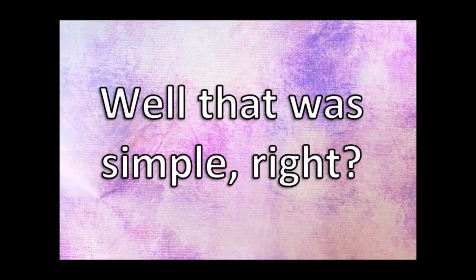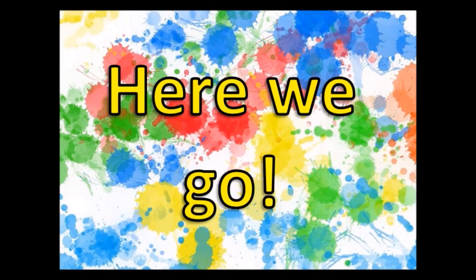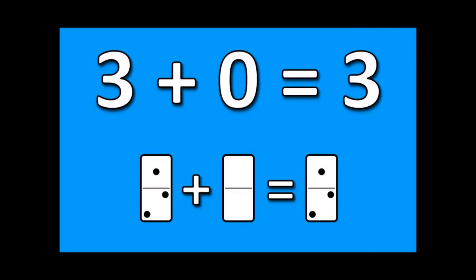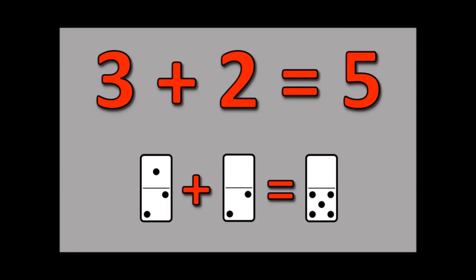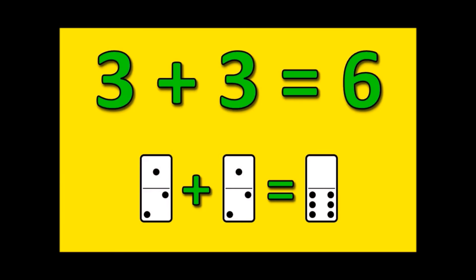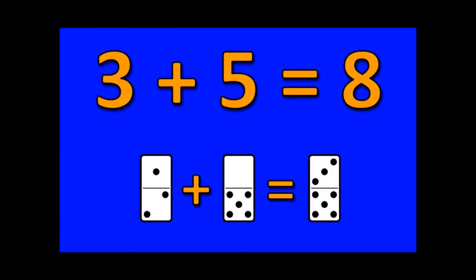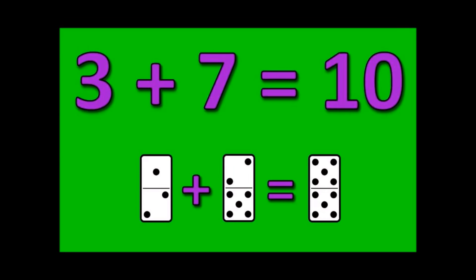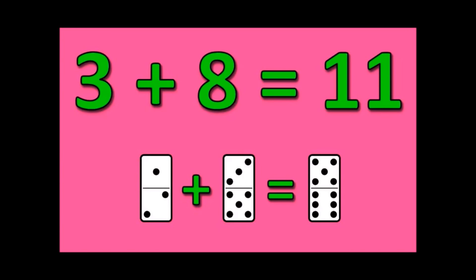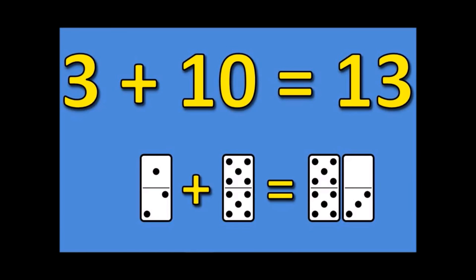Well, that was simple, right? Now we're gonna go all the way up and then all the way back down. Ready? Here we go. Three plus zero is three. Three plus one is four. Three plus two is five. Three plus three is six. Three plus four is seven. Three plus five is eight. Three plus six is nine. Three plus seven is ten. Three plus eight is eleven. Three plus nine is twelve. Three plus ten is thirteen. Now it's time to go back down.